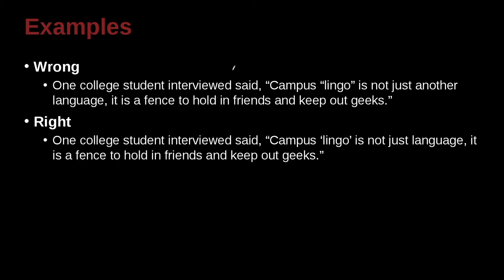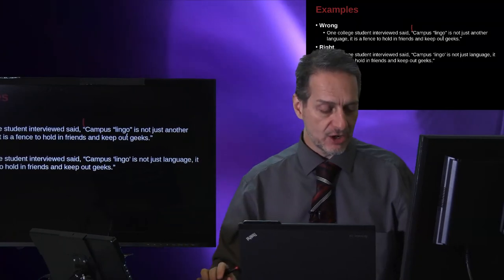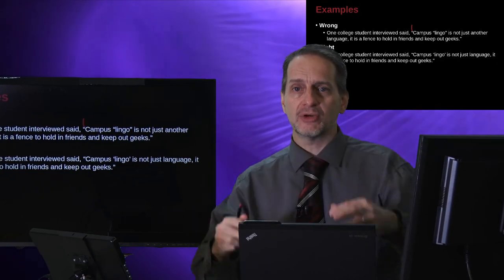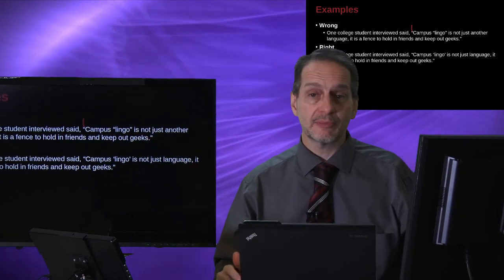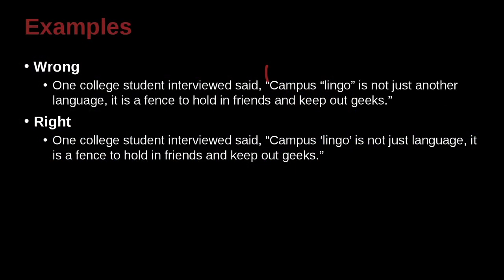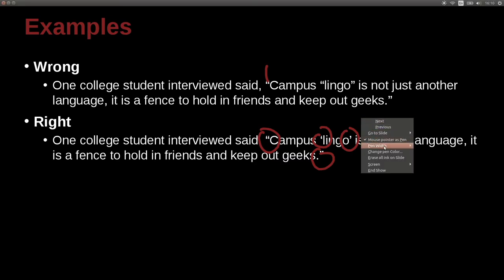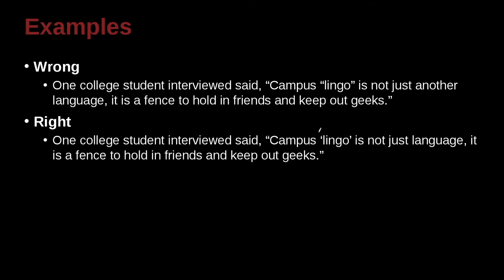Here's a little bit about quotation marks — remember single and double quotation marks. One college student interviewed said: 'Campus lingo is not just another language. It is a fence to hold in friends and keep out geeks.' In this case, they're using the word 'lingo' in air quotes inside the larger quote. So this is a quote within a quote. To write this correctly, on the outside we use double quotes, but on the inside we use single quotes. Single quotation marks, not double.